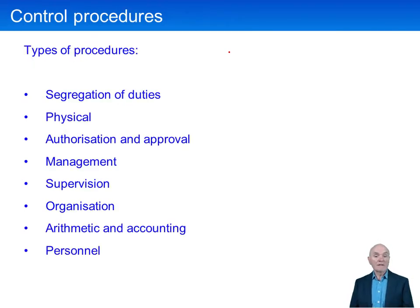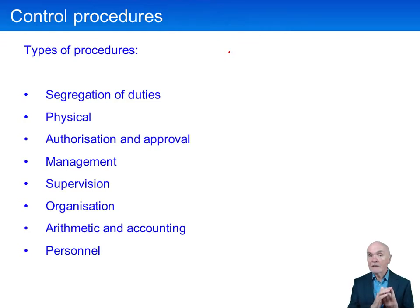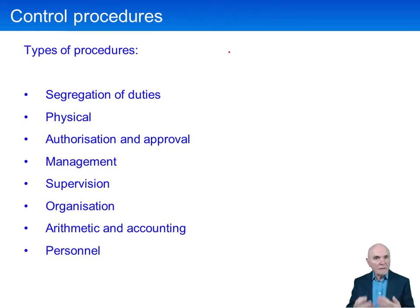Control procedures typically include the following. First of all, segregation of duties. If you have a system where one person orders goods, receives the goods, checks and approves the invoice, and then pays the invoice, then there is effectively no internal control over purchases at all. It could be that that person is being deliberately fraudulent, but it could also be that simply if you don't have an independent person checking, then you're really condemned to making the same errors.